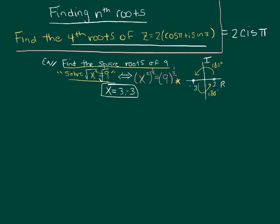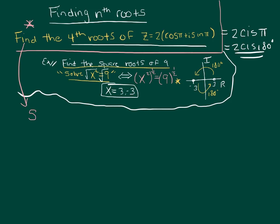But let's go to degrees for this problem. So we're going to try to solve that problem above. We can rewrite that as solve z to the fourth equals 2 cis 180 degrees.